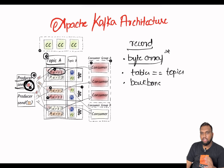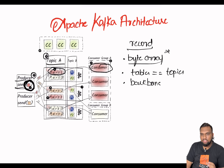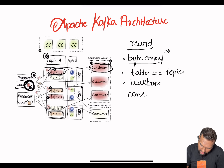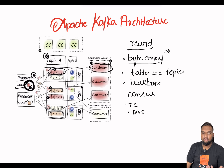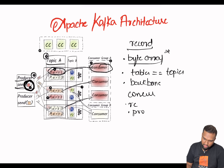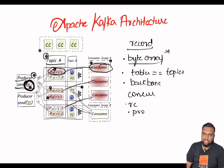Next, let's talk about consumers. Looking at the architecture diagram, consumers are responsible for receiving and processing messages from Kafka. They can read from multiple partitions as well as from multiple topics at the same time — that's one important thing to note.